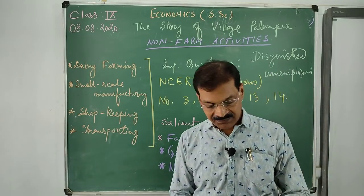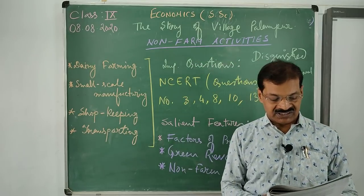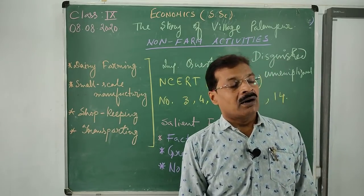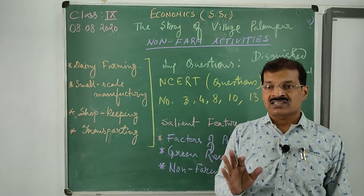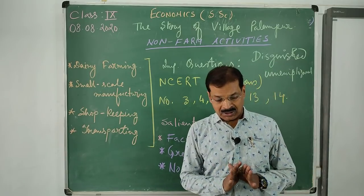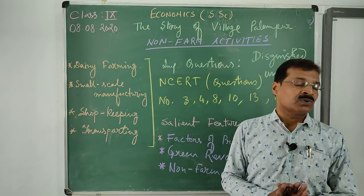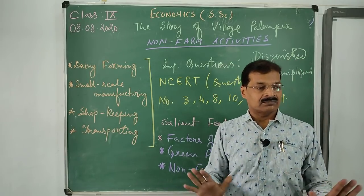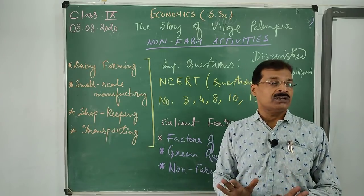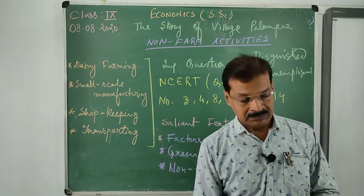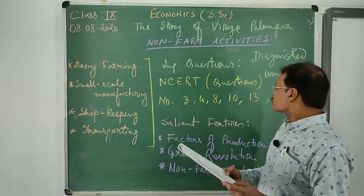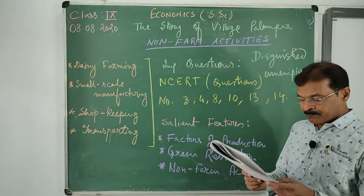Question number 8: what are the different ways of increasing production on the same piece of land? The answer here is the multiple cropping system - that is what has to be discussed as the answer.